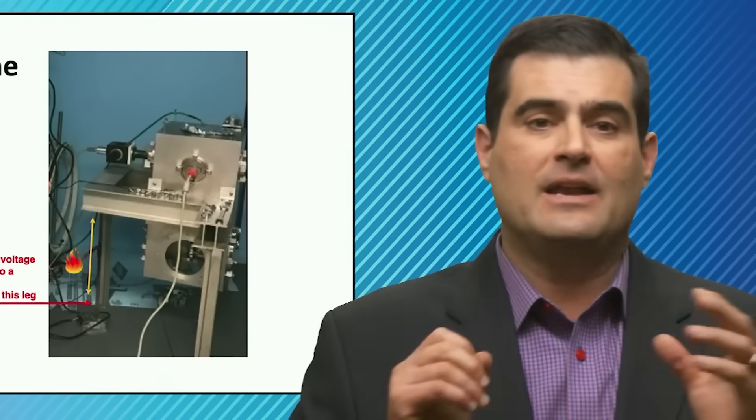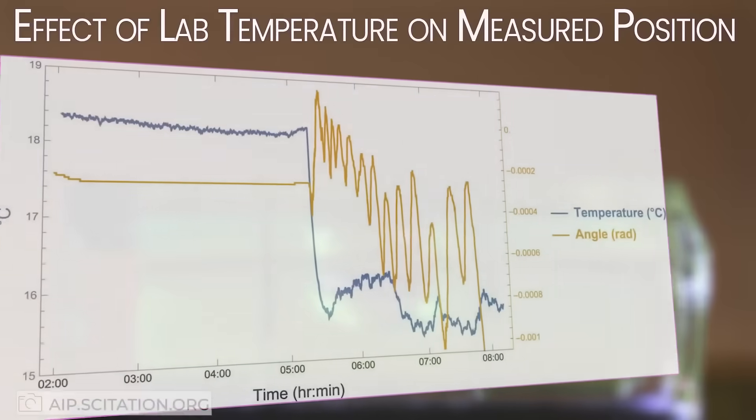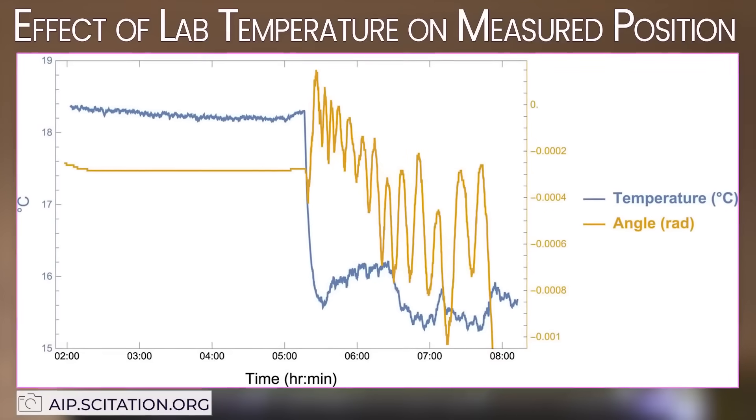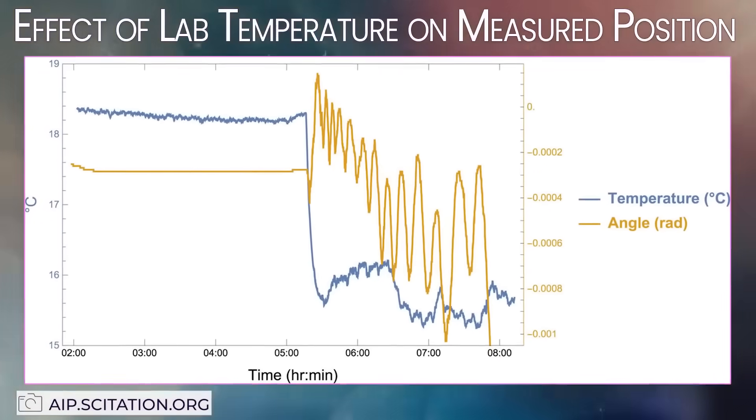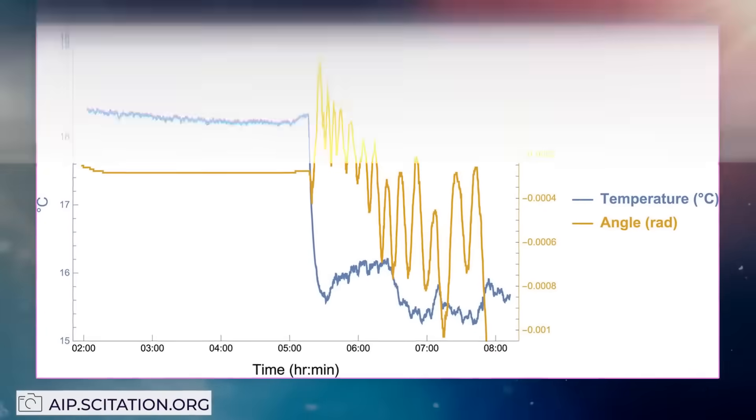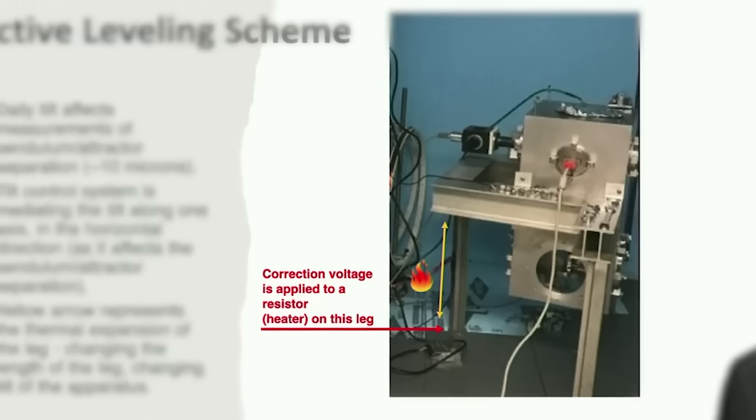Errors in the system, not in the fundamental forces, can confuse you that you've measured a deviation from the inverse square law when actually it was just a deviation of your apparatus's tilt. So they actually build in what's called temperature compensation where they can stretch or shrink the length of a leg of their apparatus.